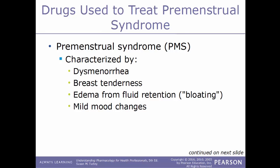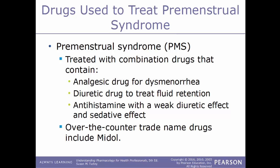PMS, premenstrual syndrome, is characterized by dysmenorrhea, breast tenderness, fluid retention or edema, bloating, and mild mood changes. This condition is treated with combination drugs containing analgesics for dysmenorrhea, diuretics for fluid retention, and an antihistamine with a weak diuretic and sedative effect. A very good example is Midol, an over-the-counter drug.